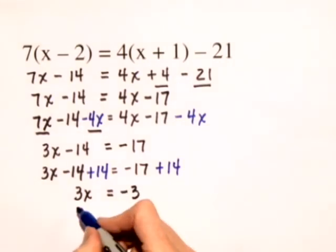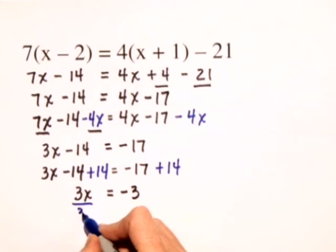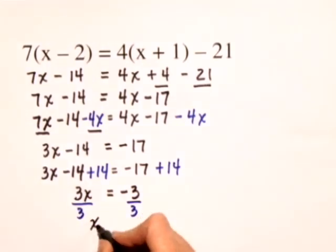The last step is to divide both sides by 3, and we get our solution that x is equal to negative 1.